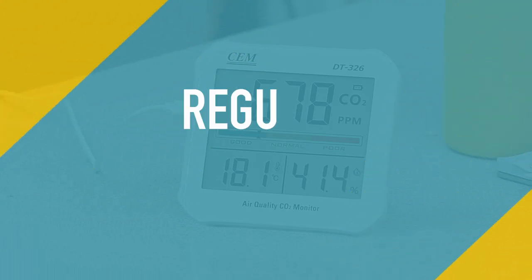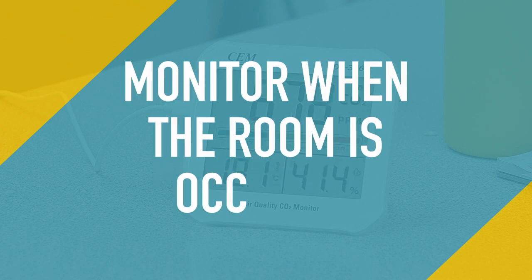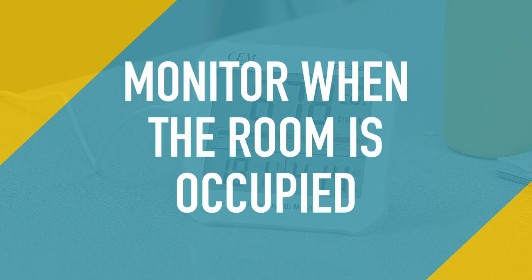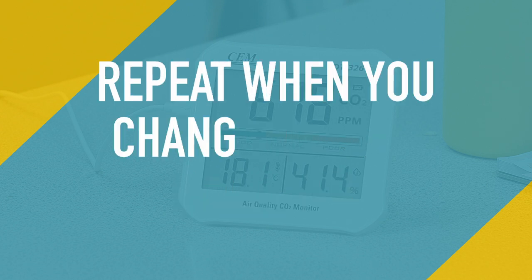You should regularly monitor to make sure that you've got accurate CO2 readings. Do this when the room is occupied and for at least half an hour at a time to make sure the reading is right. You should also do it if you change how you use the room. There are lots of factors that can affect the CO2 reading, including the number of people in the room, the activities they're doing, where you place the sensor, and even the weather.